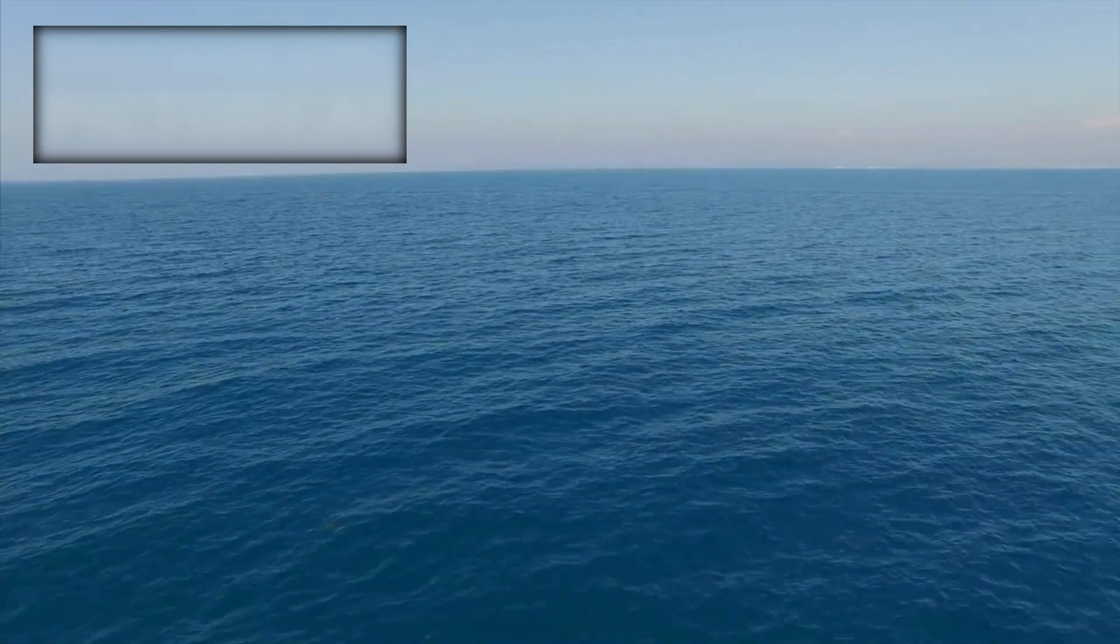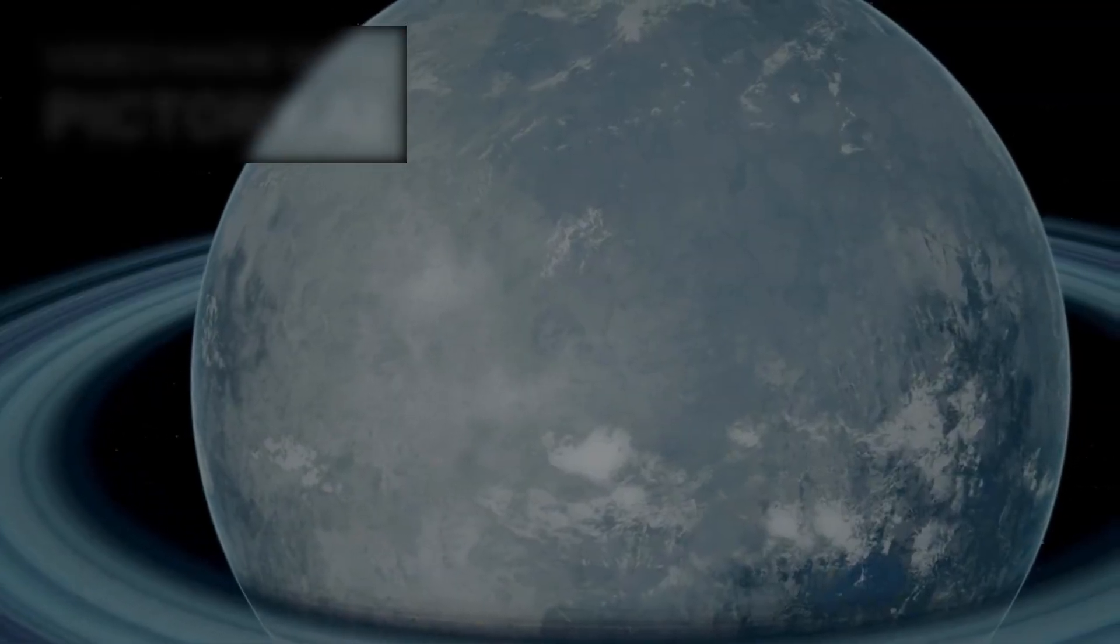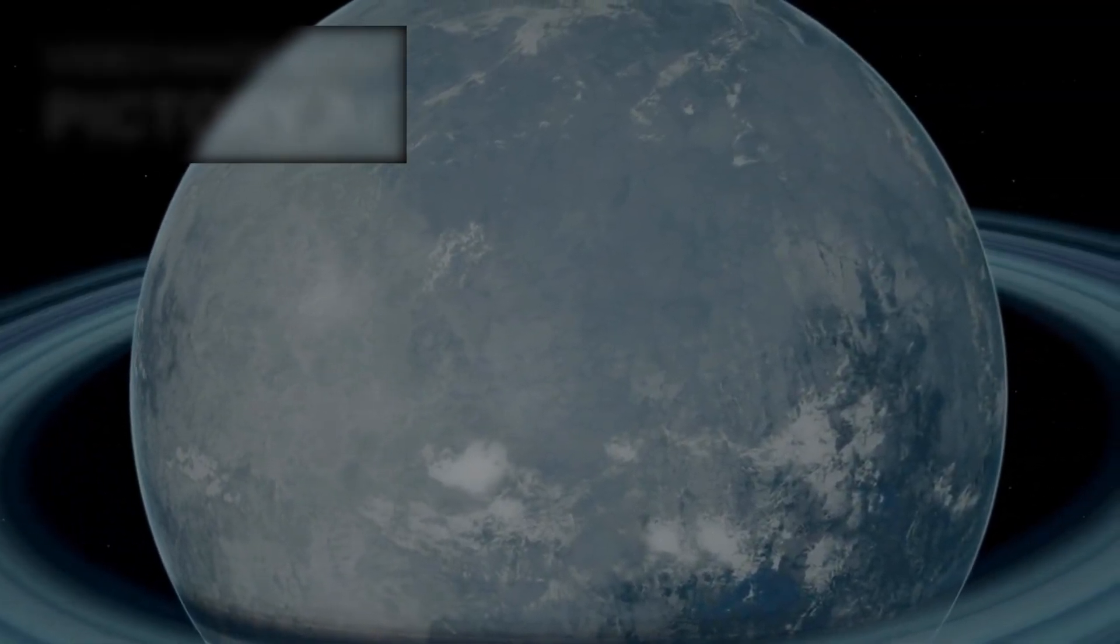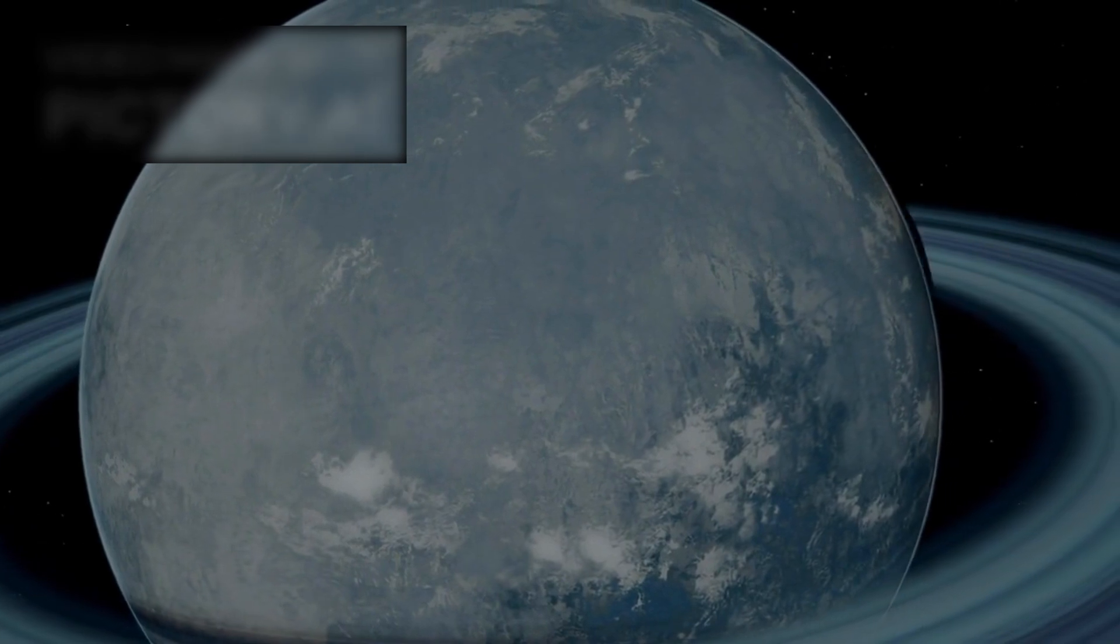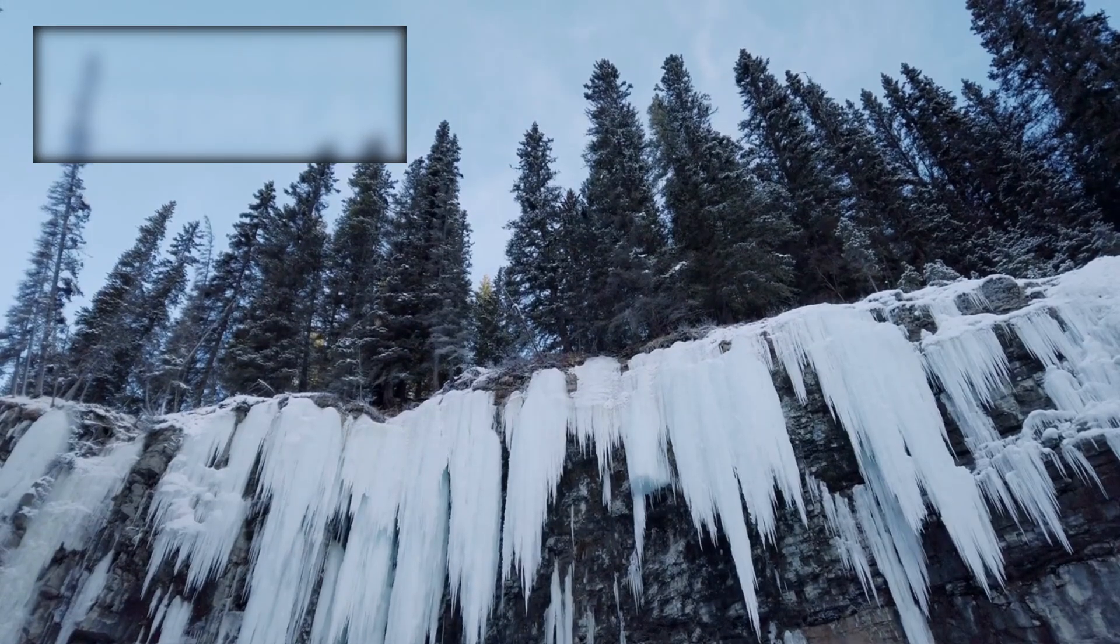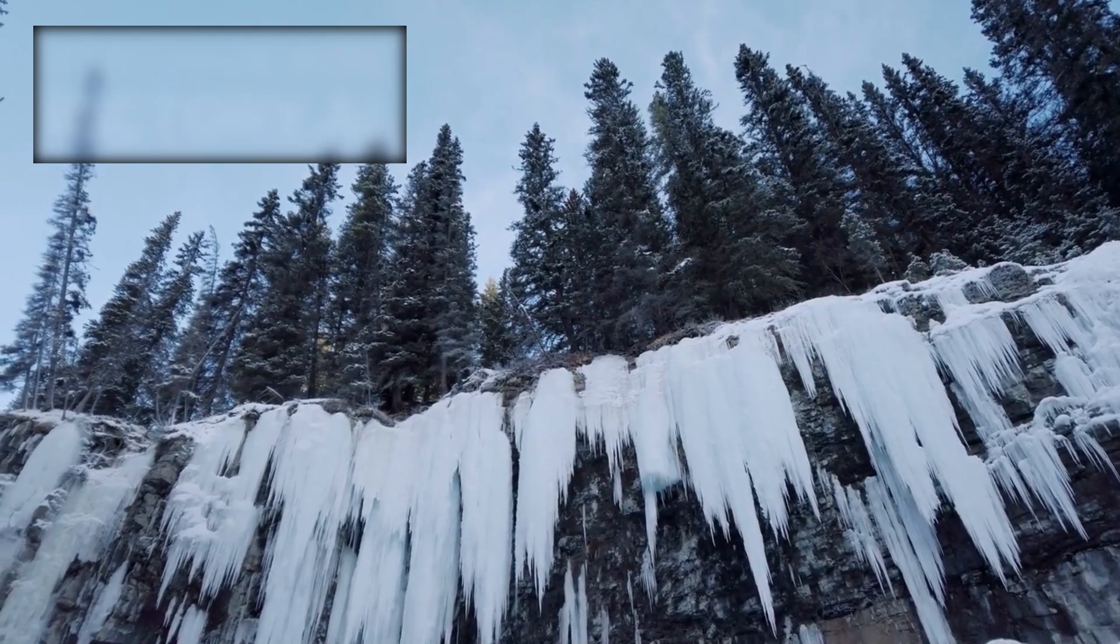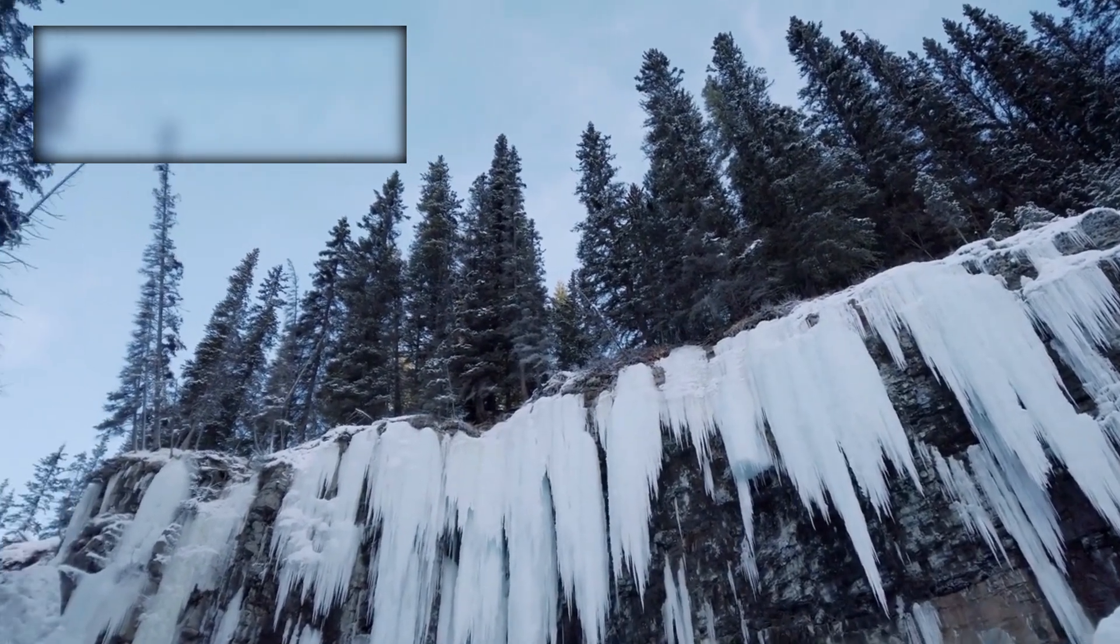What if Pluto's hidden ocean isn't just liquid, but alive? Some researchers speculate that microbial life could exist in the dark, high-pressure, low-temperature environment beneath the ice. Any such organisms would have evolved in isolation, protected from sunlight, radiation, and extreme cold by thick layers of ice.